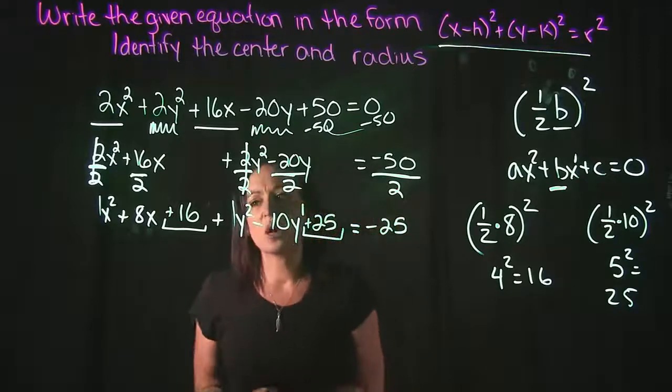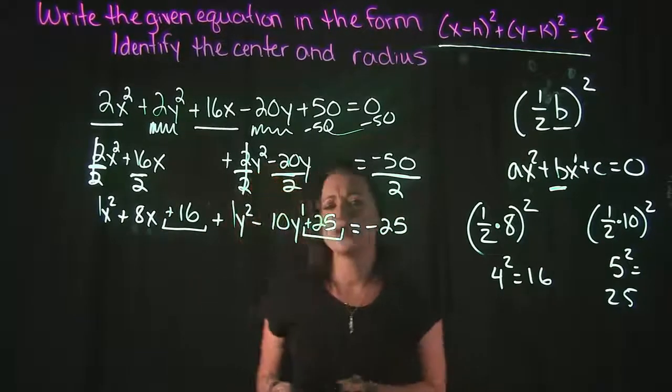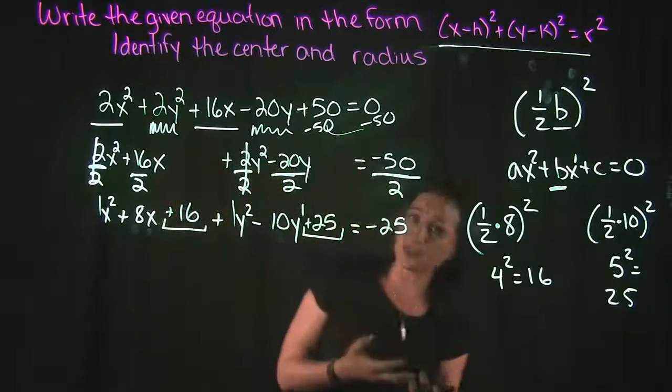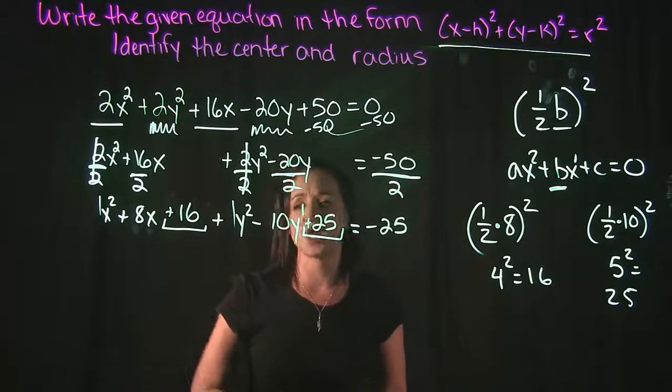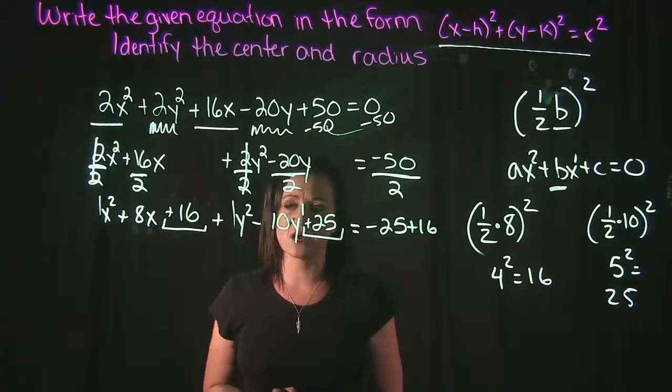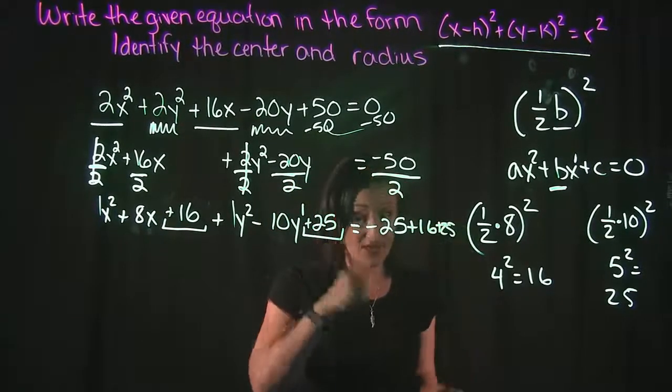Now, one other thing that we need to be aware of. I plugged in a +16 here. I plugged in a +25 here. Remember, what you do to one side of the equation, you must do to the other side of the equation. So if I'm going to add 16 here, I also have to add 16 there. If I'm going to add 25 here, I also need to add 25 here.